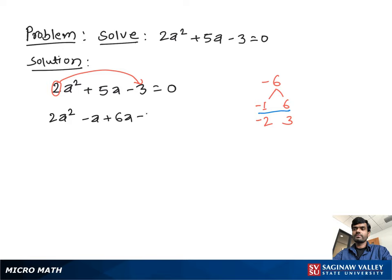So we write 2a square minus a plus 6a minus 3 equal to 0. Now from this pair we take a as a common, so we have 2a minus 1.